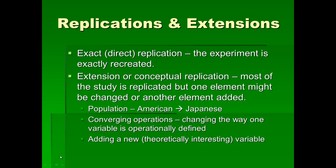Replications and extensions are topics I talk about a lot in terms of assignments. An exact, simple, or direct replication is when the experiment is exactly recreated — you do the experiment over again. An extension or conceptual replication is where most of the study is replicated exactly, but one element might be changed or another added. A very basic extension would be changing the population — for example, the original study was done on Americans and you do it on Japanese people for some theoretical reason.